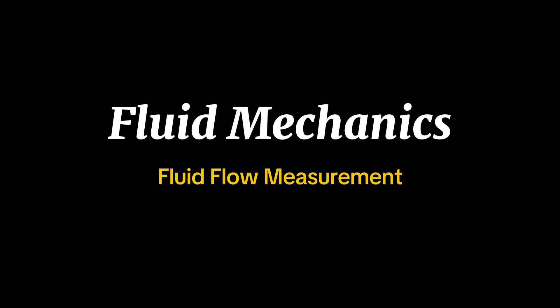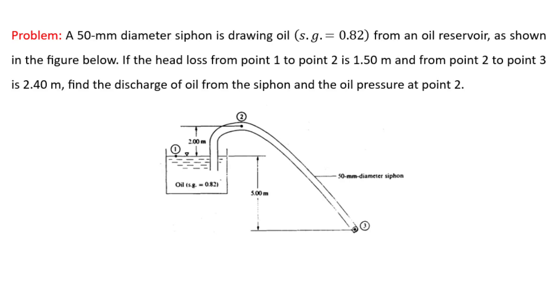Hello everyone! For today's video, we're going to solve a problem from fluid flow measurement. A 50mm diameter siphon drawing oil with a specific gravity of 0.82 from a reservoir. We're given head losses of 1.50m from point 1 to point 2, and 2.40m from point 2 to point 3. We need to find the discharge of oil from the siphon and the oil pressure at point 2.